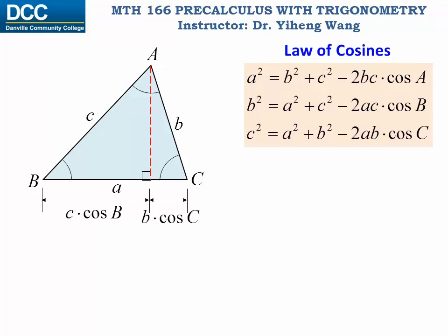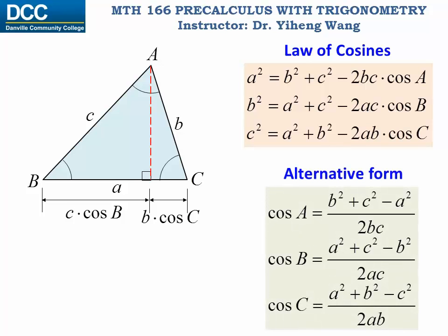From these three equations, we can solve for cosine a, cosine b, and cosine c respectively as expressions of the three sides a, b, and c. This is known as the alternative form of the Law of Cosines. As you can see, from the alternative form, we can solve for the angles if we know all three sides.